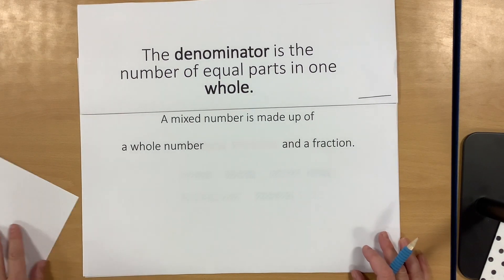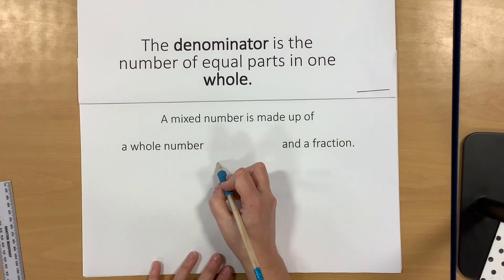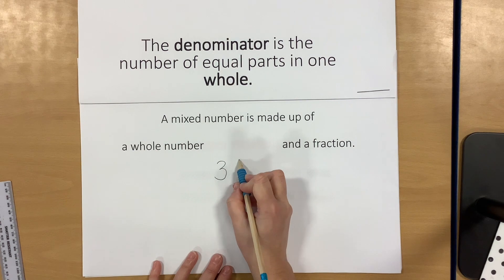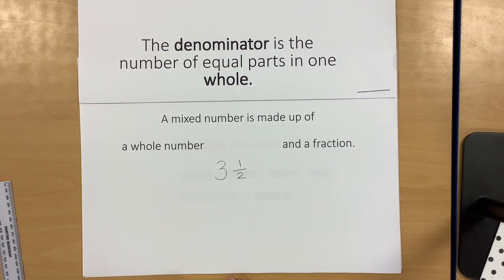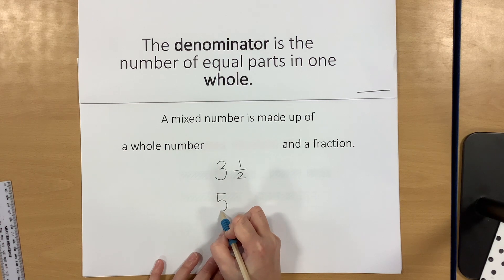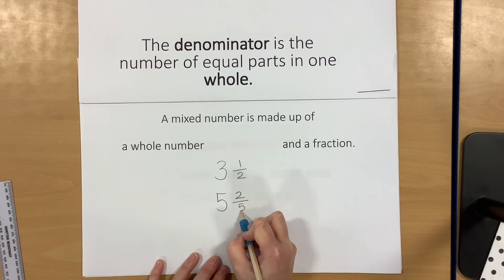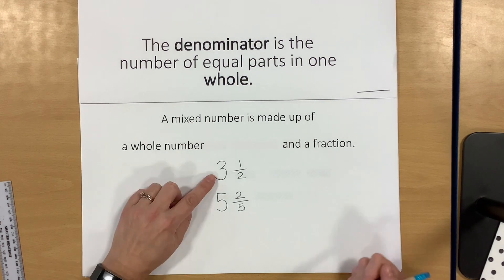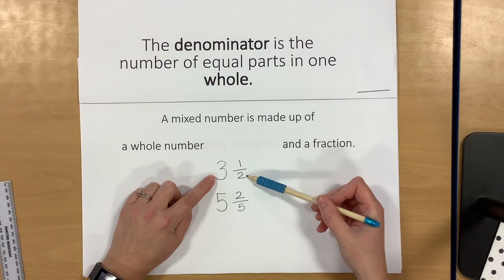So what is a mixed number? A mixed number is made up of a whole number and a fraction. For example, three wholes and one half, or five wholes and two fifths. It's where we have a whole number and a fraction all together.